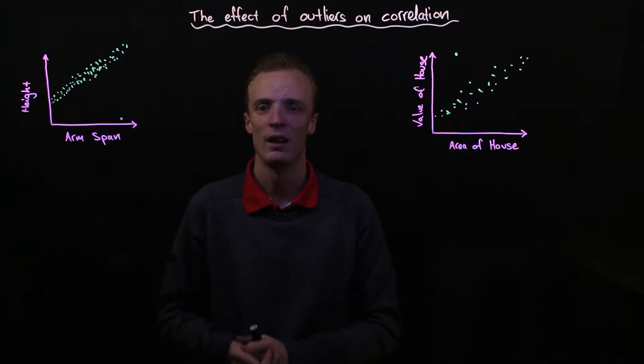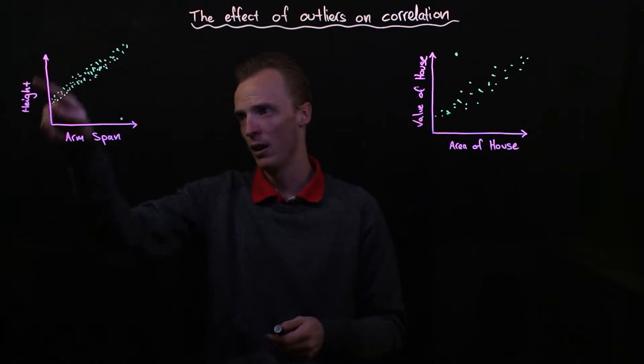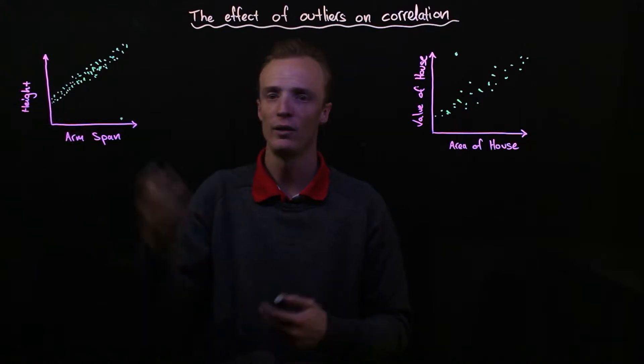Now first of all, what is an outlier? Well, if we have a look at our graph here, I've graphed arm span against height.